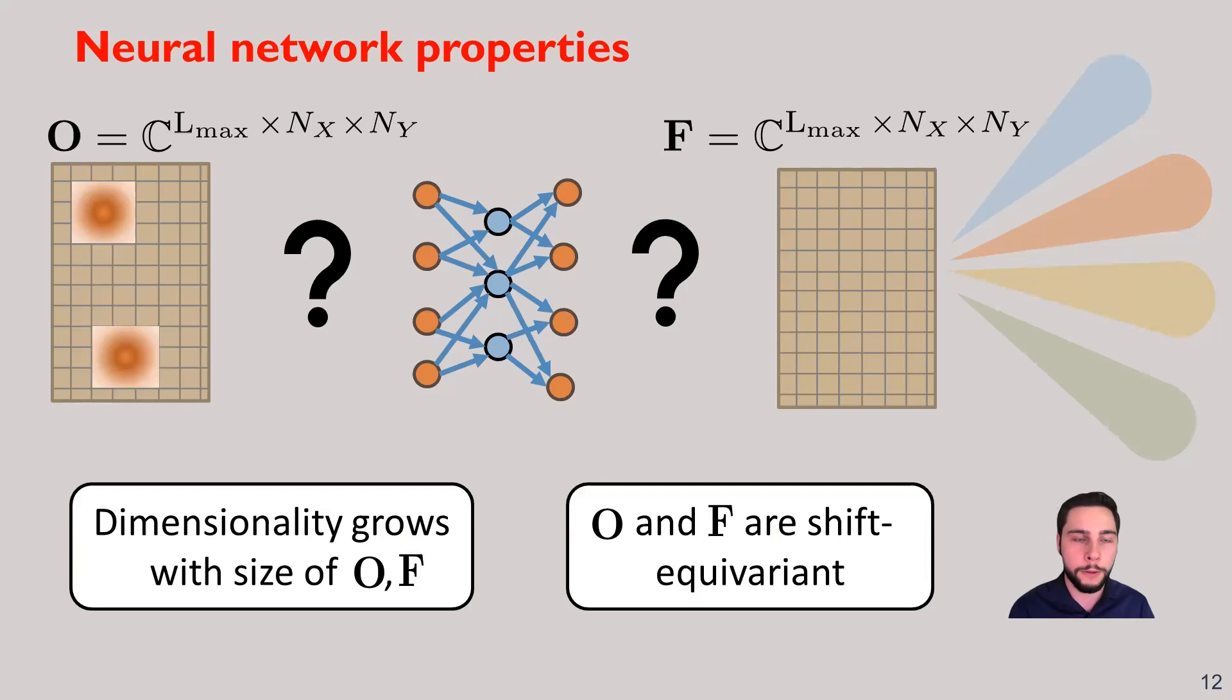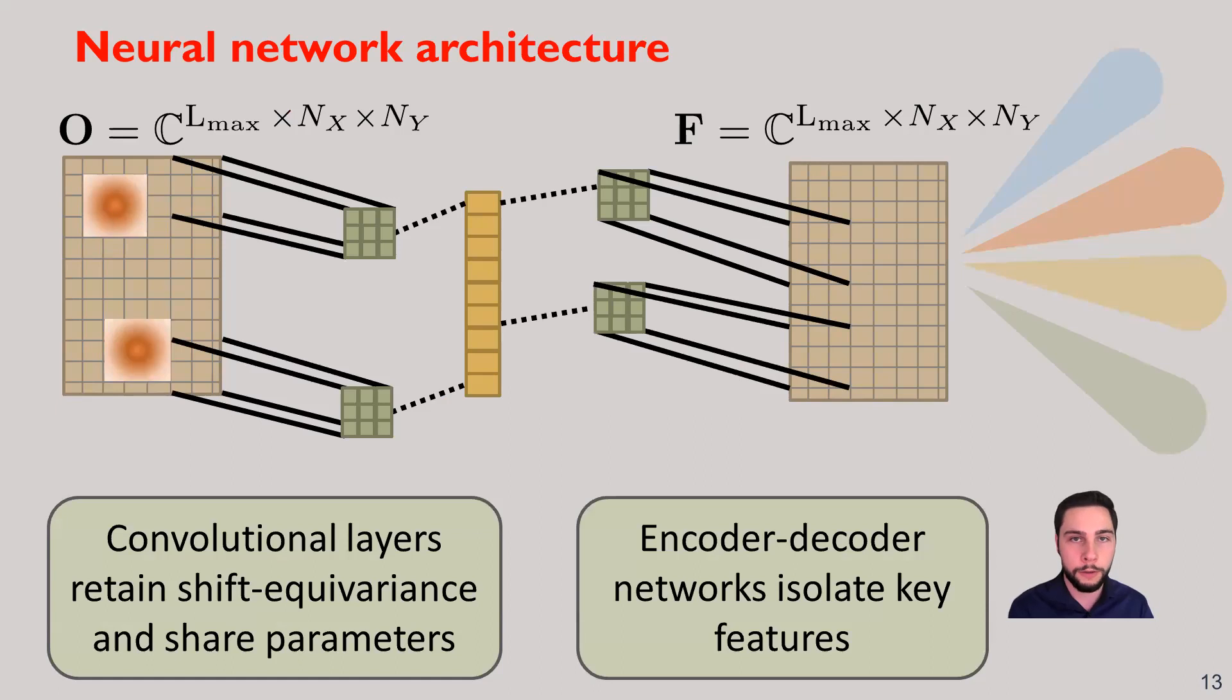Furthermore, we actually have this very powerful inductive bias called shift equivariance. Essentially, what this boils down to is if we have an observation that shifts to the right, say one grid space, then we would probably like our codebook to do something similar. We should see a corresponding shift. And this is the idea of shift equivariance. All of this motivates the idea of using a convolutional neural network, and in particular, an encoder-decoder, because this will allow us to save parameters and isolate key features, while also retaining that shift equivariance that is a very powerful inductive bias.